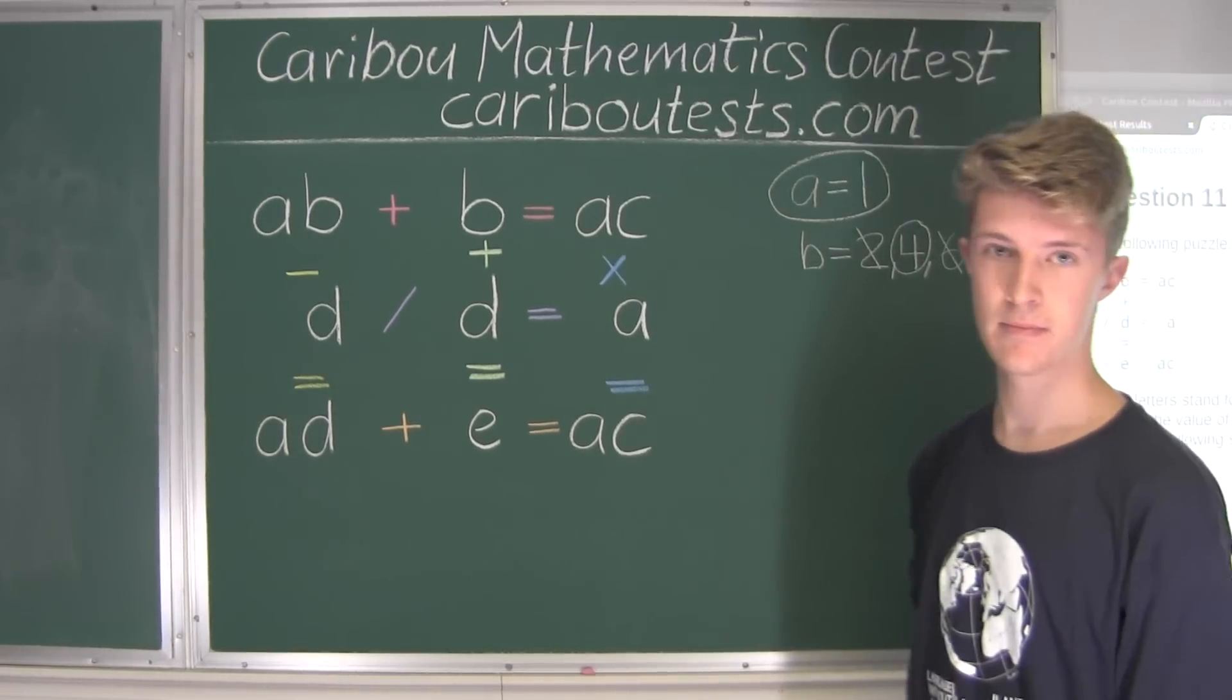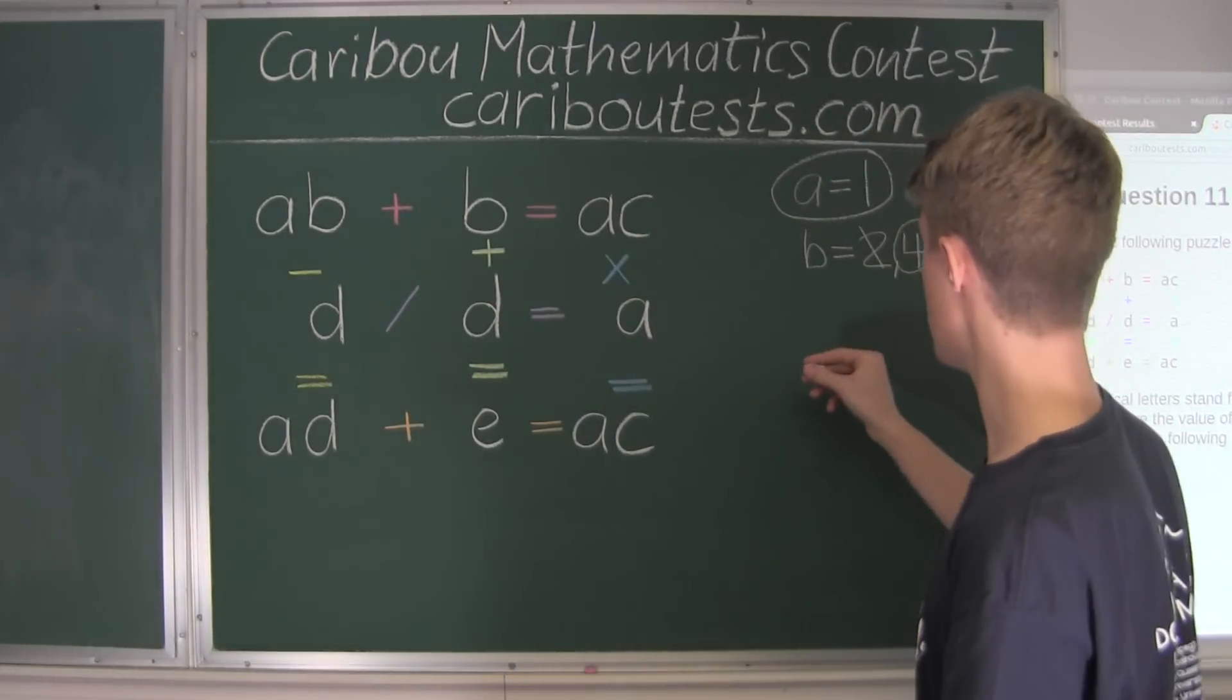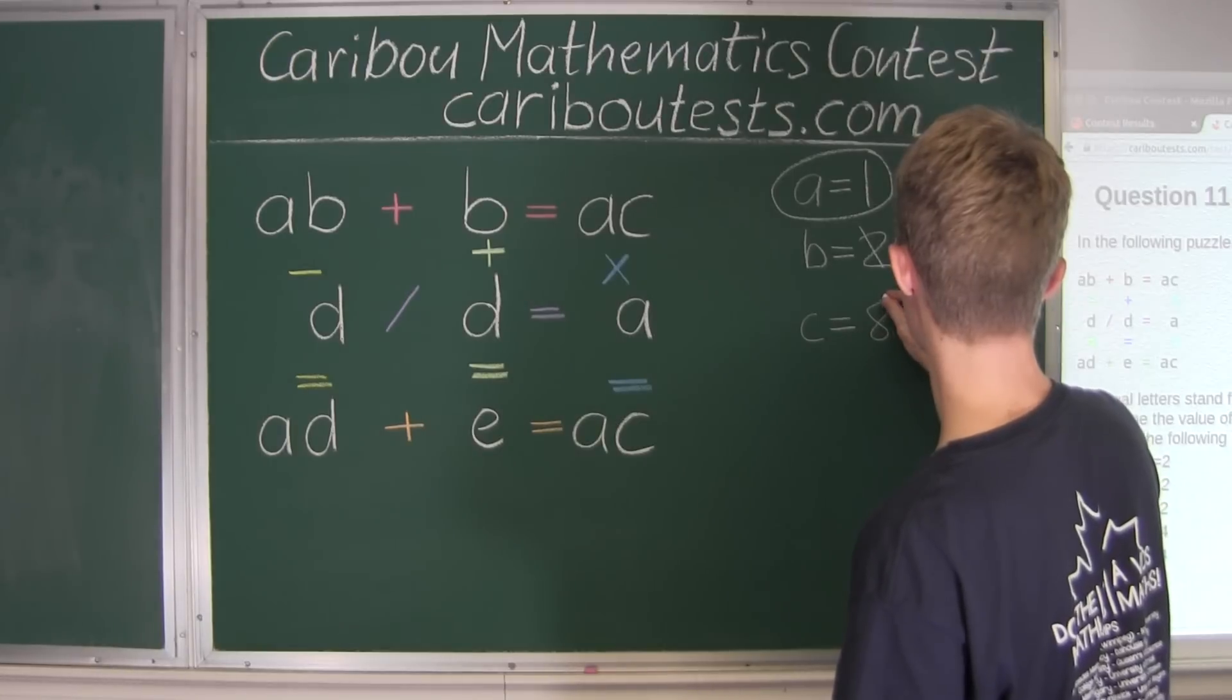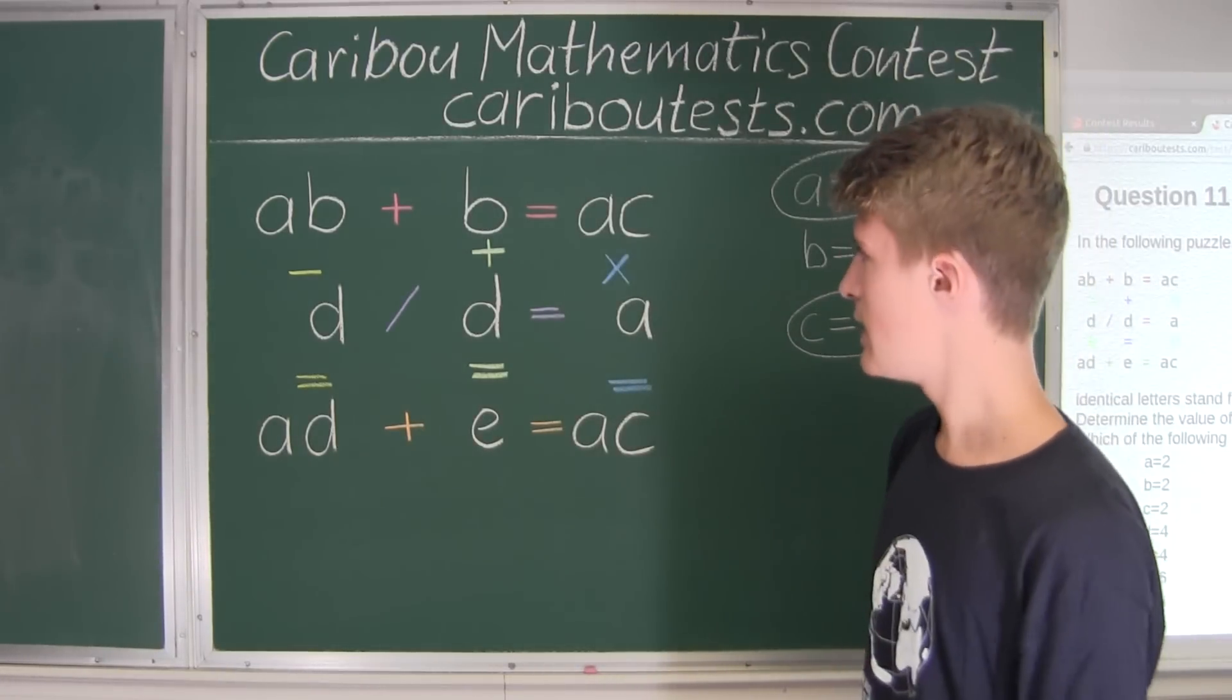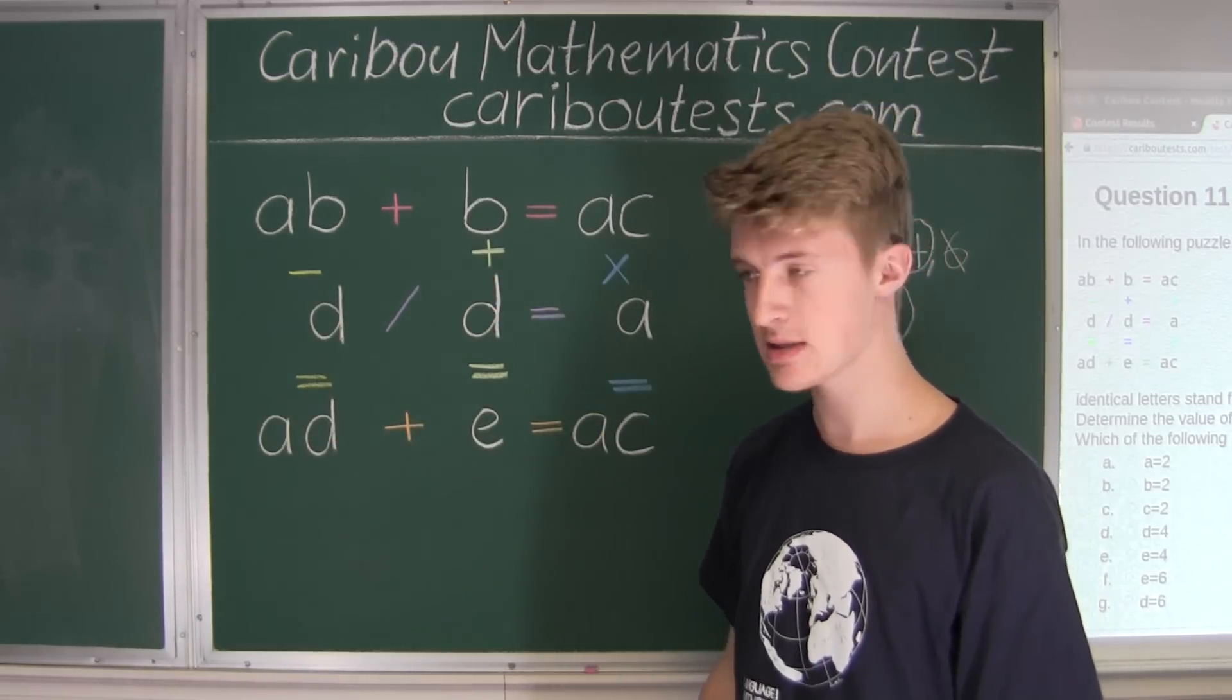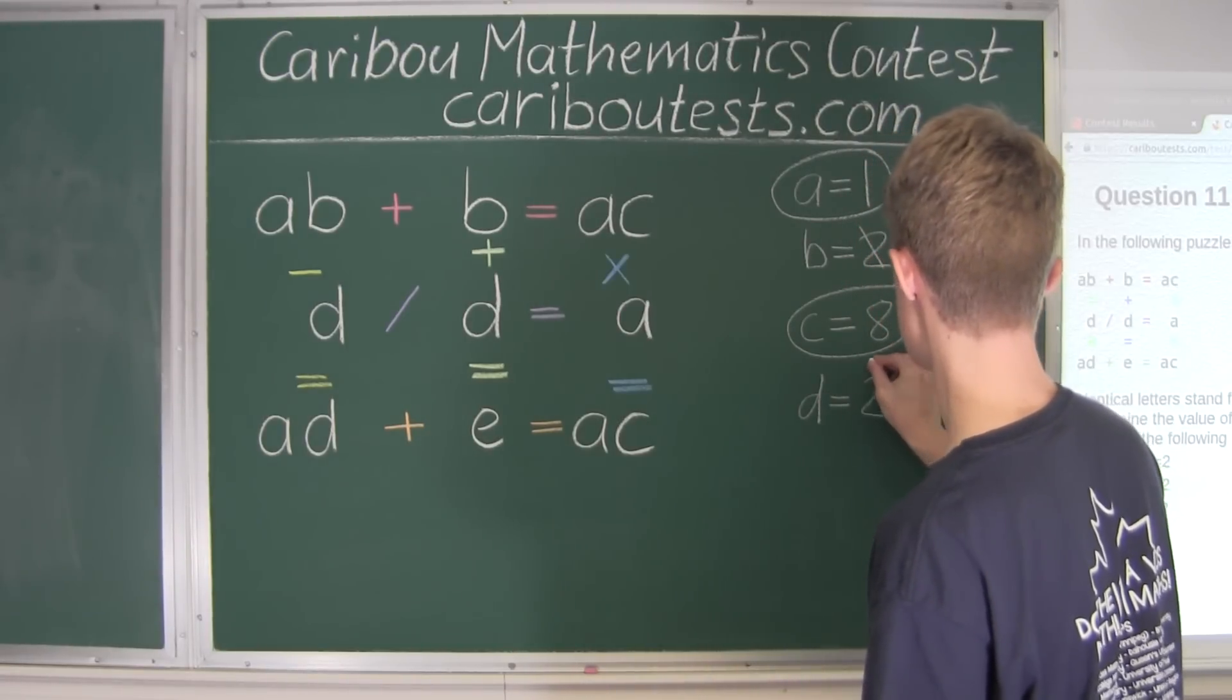So we already showed that 14 plus 4 is 18. That means that C equals 8, and we know that must be true. So we'll circle that because we know that's true. And here we would have 14 minus 2 is equal to 12. So we know D must be equal to 2. So we'll circle that 2.